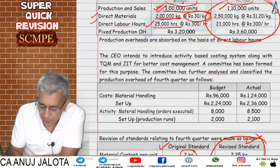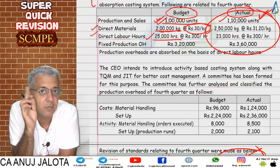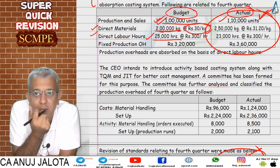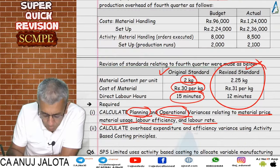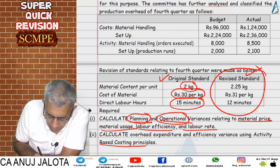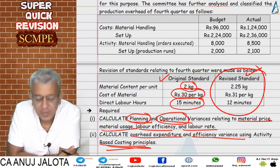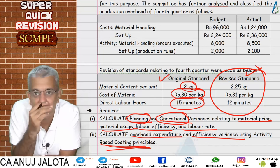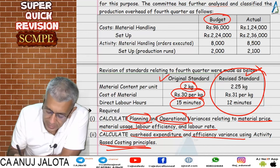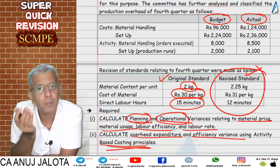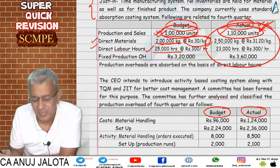Planning variances are differences between original standard and new standard. Operational variances are differences between new standard and actual. Prepare data for 1 lakh 10 thousand units: original standard, new standard, and actual — then compute variances. Nothing new here. Part two asks to compute overhead expenditure and efficiency variance using activity based costing principles. For each expense with a different cost driver, compute variances separately.